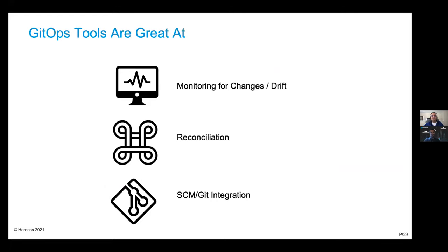GitOps tools are great at: number one, monitoring for changes or drift — if you want to deploy a security fix to the correct environment, drift detection shows the commit ID, the person making that commit, the hash — exactly what is getting changed on which cluster. Number two, reconciliation — GitOps ensures your cluster and image registry always remain in sync. Last, source code management and Git integration — this helps keeping role-based access control in check, ensures the right people have the right permissions, and because Git remains your source of truth, we always know which deployments are happening and in which environment.